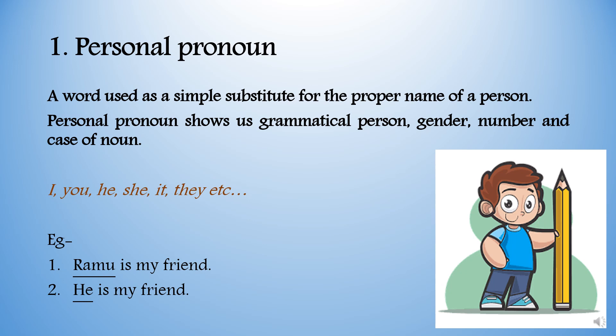Now see these two sentences. Ramu is my friend. He is my friend. The subject in the first sentence is a noun — Ramu. The subject in the second sentence is a pronoun — he — used in the place of noun Ramu.